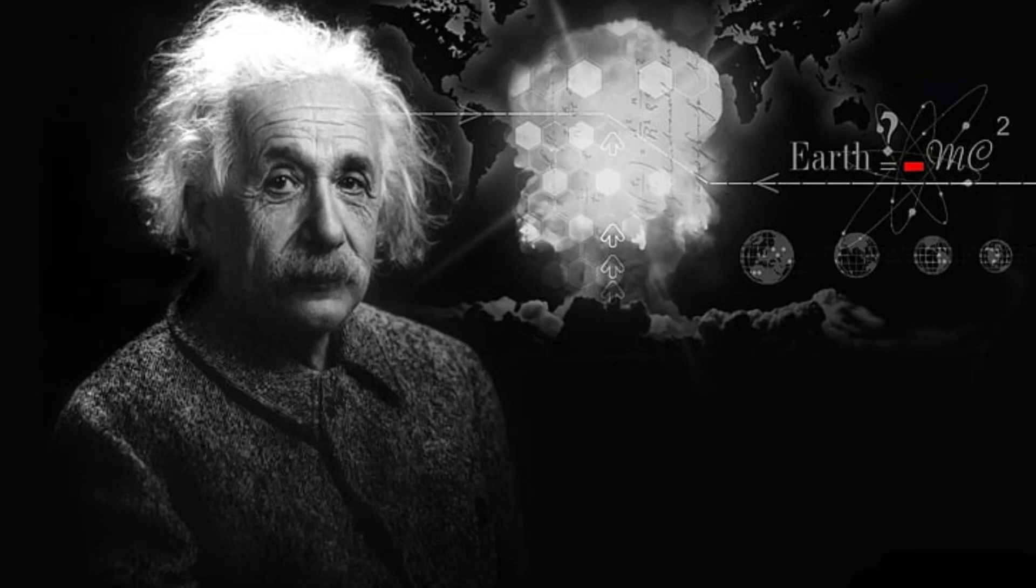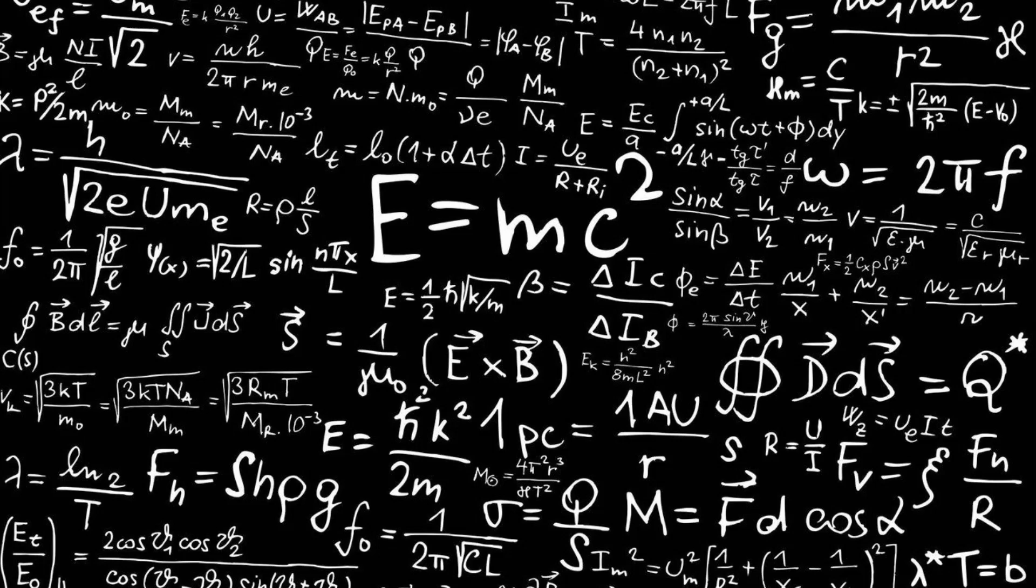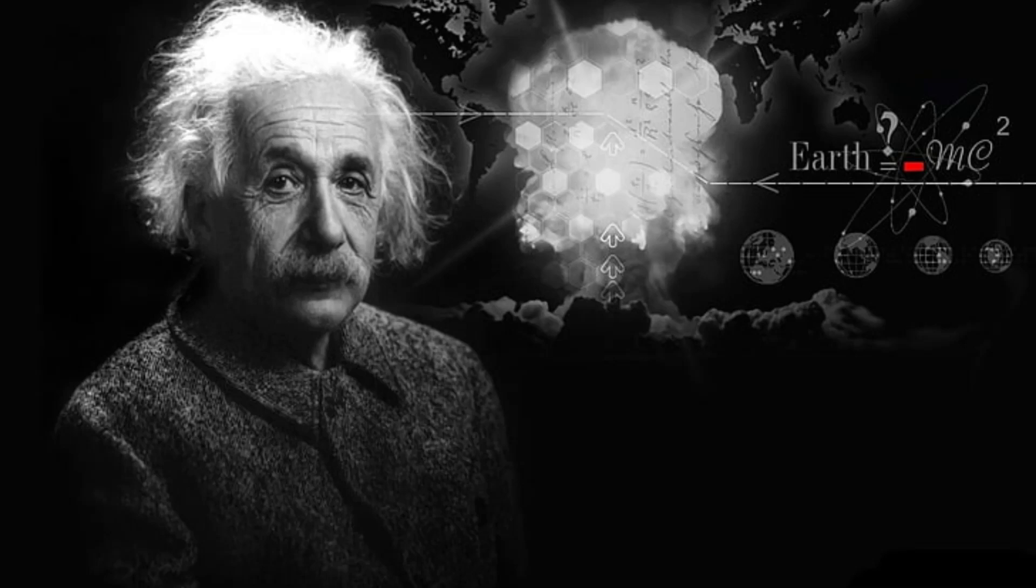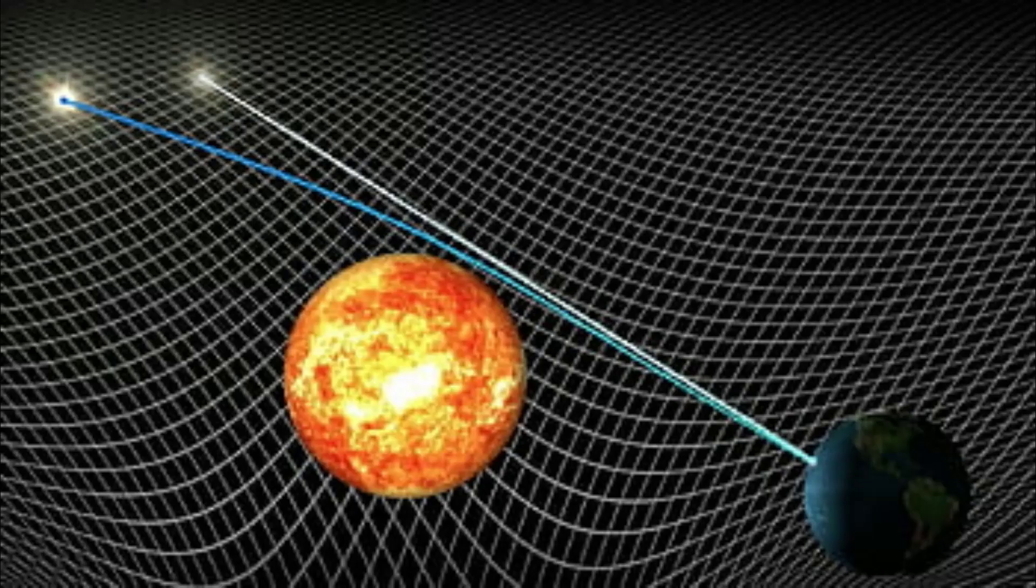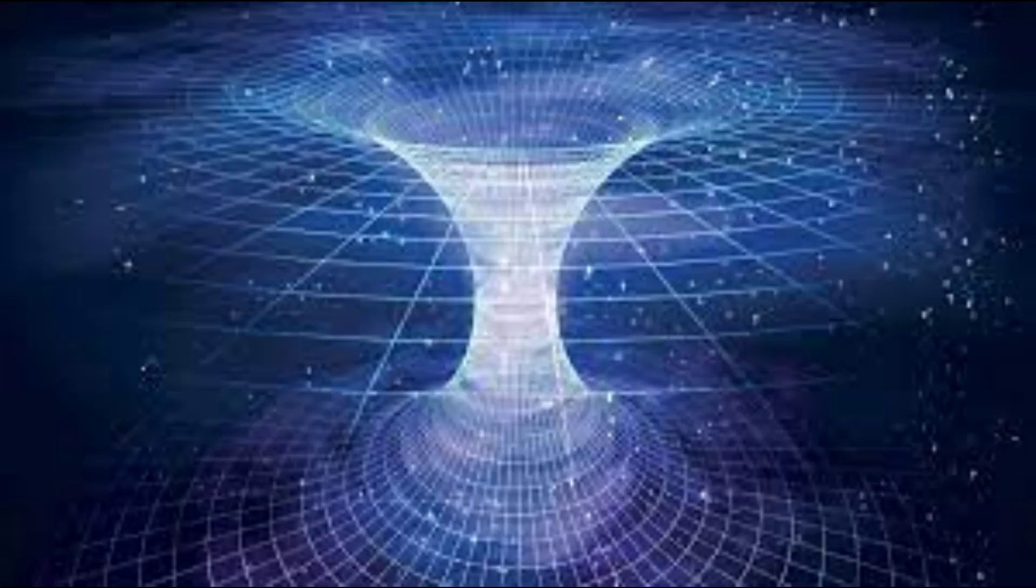The theory of relativity is one of the most significant scientific theories of the modern era. It was first proposed by Albert Einstein in 1905 and later expanded upon in 1915. The theory fundamentally changed our understanding of the nature of space, time, and gravity.